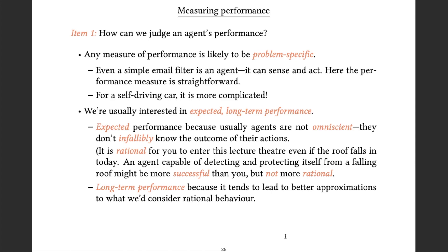For a more interesting autonomous agent, something like a self-driving car, it's going to be much more complicated. You get into significant issues regarding what the actual goal is, because its goals can be multiple and can conflict with one another. You probably want your journey to be safe, fast, economical, and taking the shortest route accounting for traffic. These things work against each other — you can go at 350 miles an hour, but this may not be very safe. It's a problem-specific measure.